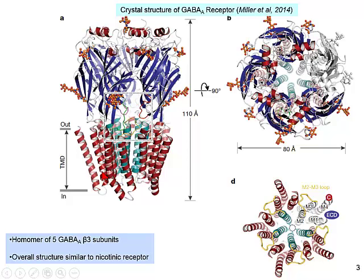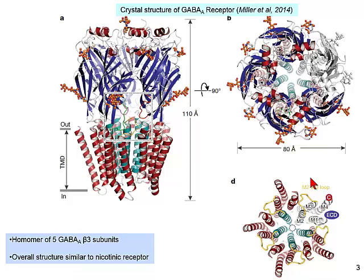The receptor has a transmembrane domain mostly consisting of alpha helices, and an intracellular part not very well resolved in most X-ray crystallographic structures — here it's been cut off to make a construct that will crystallize. Looking from the top of the membrane, we see the usual pentameric structure with the transmembrane domain lining what appears to be an ion channel. This particular one is a homomer of five GABA-A beta-3 subunits.